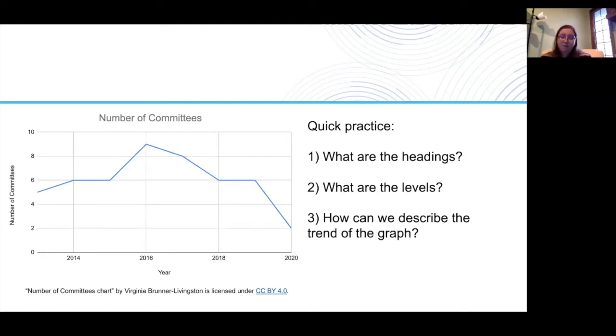Remember that levels are how we measure information. On the left hand side of the screen, the number of committees, we are measuring by twos from 0 to 10 and years we are measuring starting 2013 up to 2020.